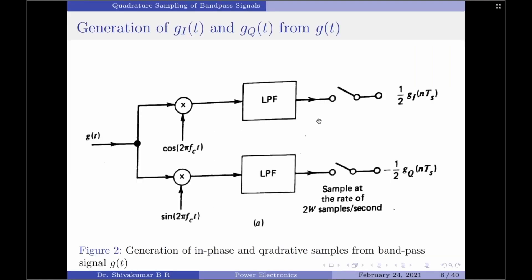Coming back to the diagram, g_i(t) and g_q(t) at the outputs of the low pass filters in the upper and lower paths are sampled at the rate of 2W samples per second, generating samples g_i(n·Ts) and g_q(n·Ts). However, we should note that when we perform this operation there is a scaling factor involved — we obtain a constant of 1/2 and −1/2 with respect to g_i(n·Ts) and g_q(n·Ts) respectively.